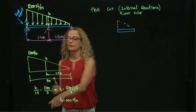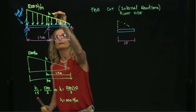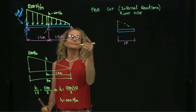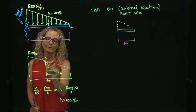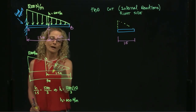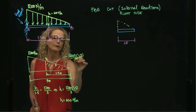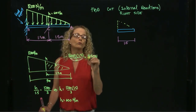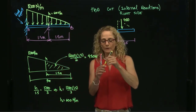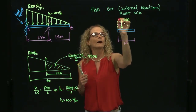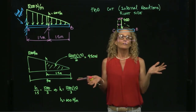Now in my free body diagram I have a length of 1.5 meters and a height of 600 newtons per meter. I can represent this piece as a concentrated load equal to the area of the triangle: 600 times 1.5 divided by 2, which equals 450 newtons. This force will be located at 0.5 meters from my cut point C. So this is B and this is C, and I don't have any other external force.